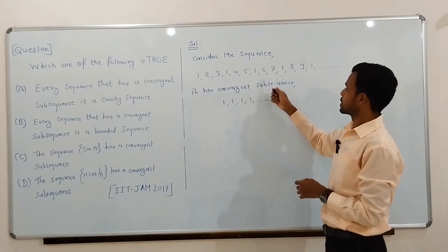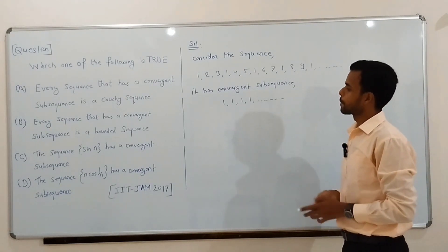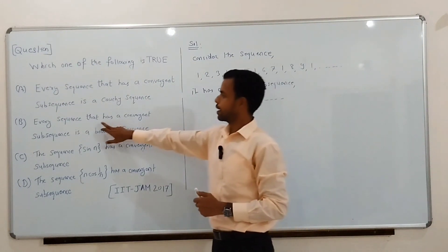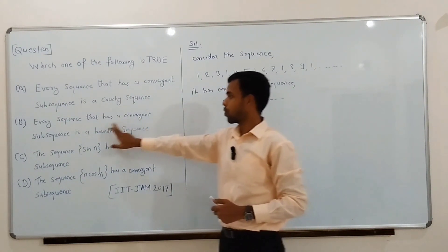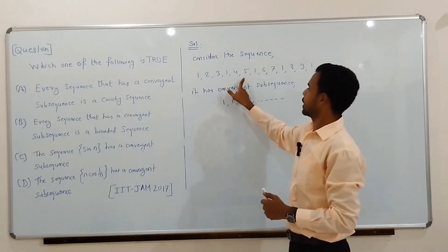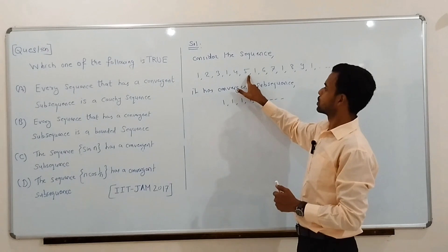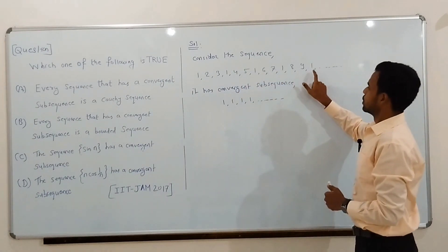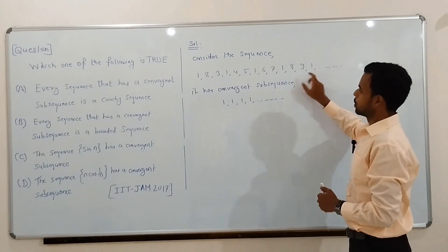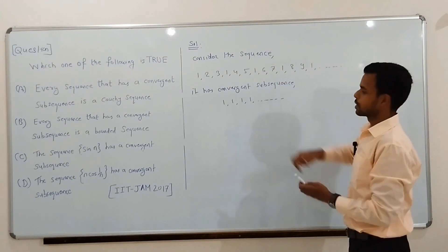So, we have constructed a sequence that has a convergent subsequence. Let us verify the options one by one. Option B states that every sequence that has a convergent subsequence is a bounded sequence. Our constructed sequence has a convergent subsequence, but it is not a bounded sequence, because this sequence has no upper bound.